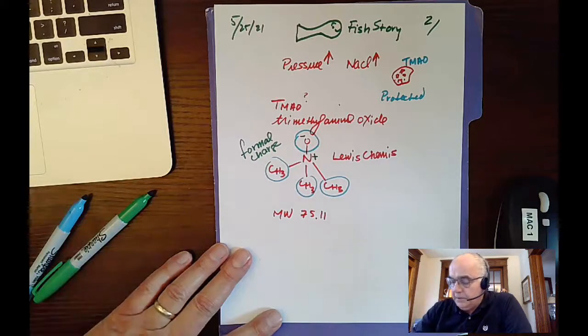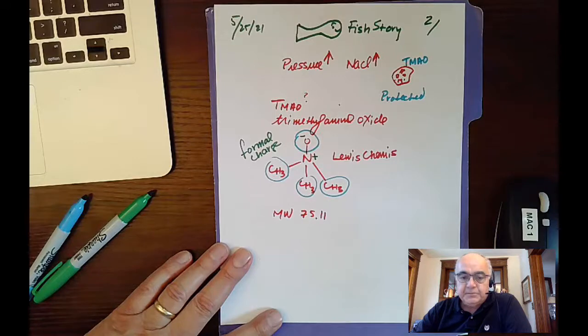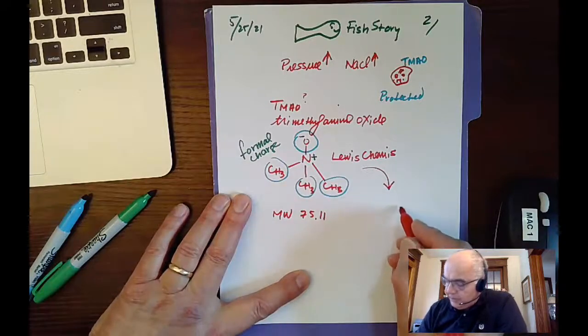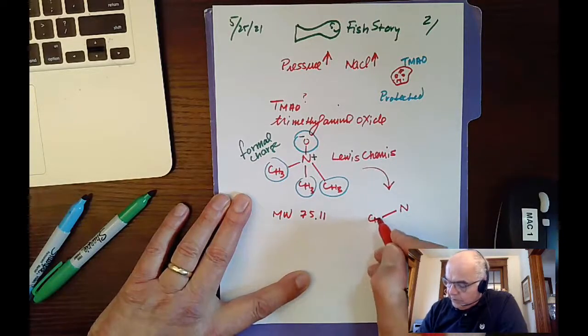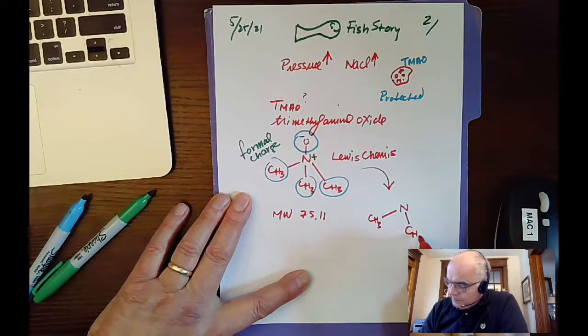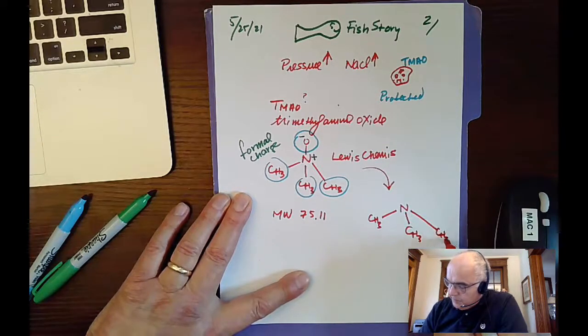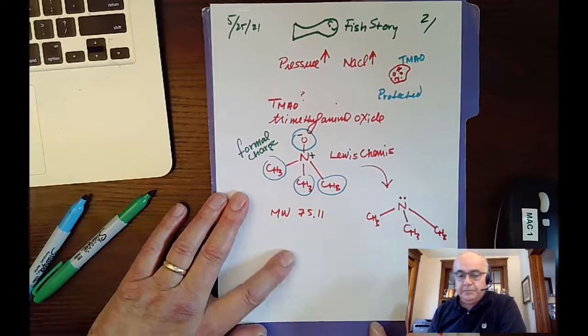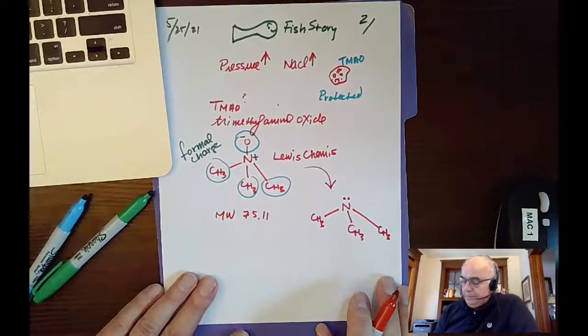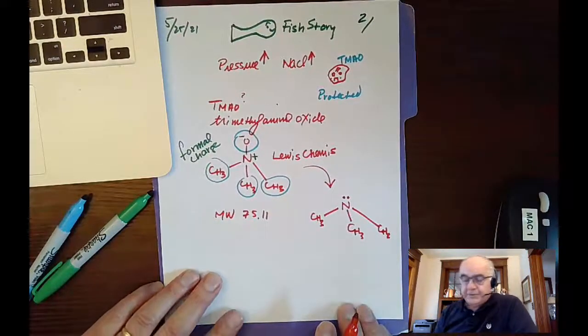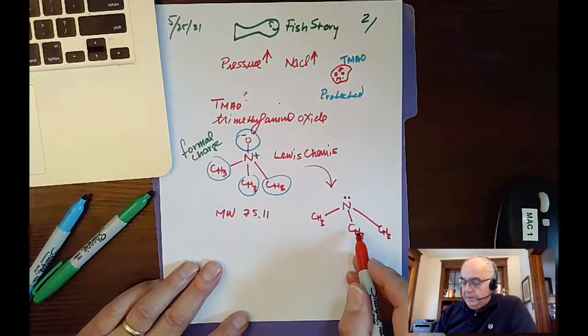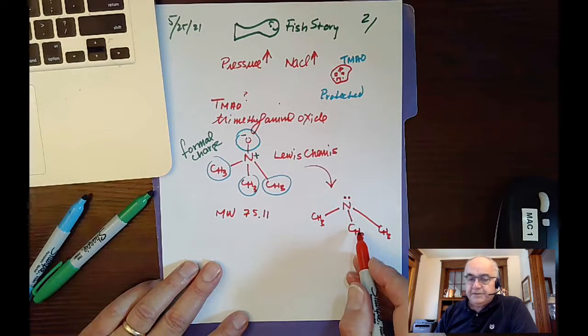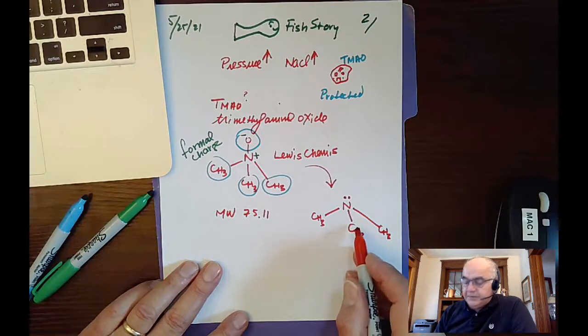This becomes a nitrogen with only three methyl groups - the oxygen is gone. We put extra electrons here, we'll talk about that later on. This is what the smell actually is. Remember, this has a very low boiling point and we can smell it. Now this is a base.